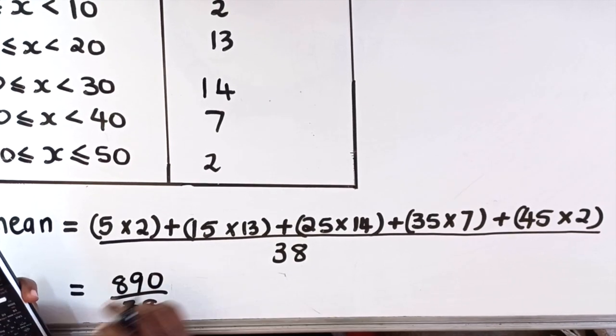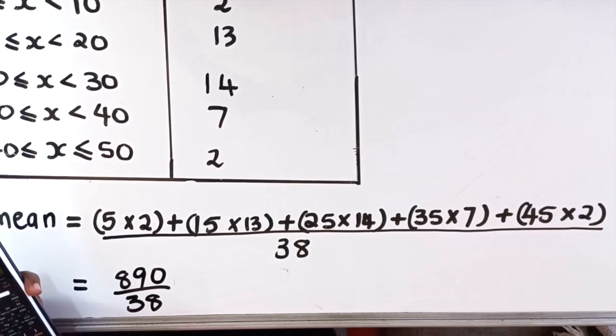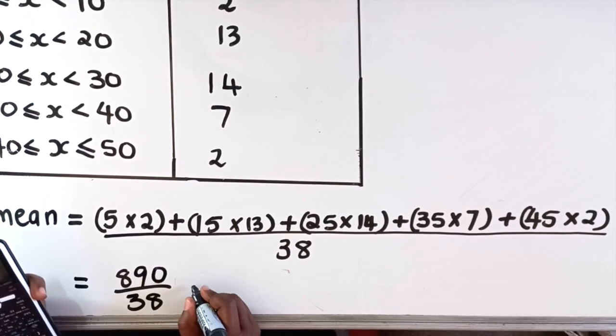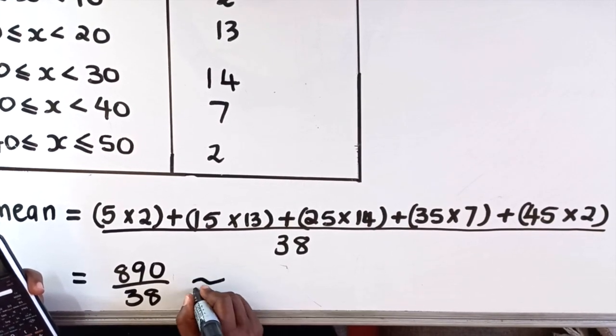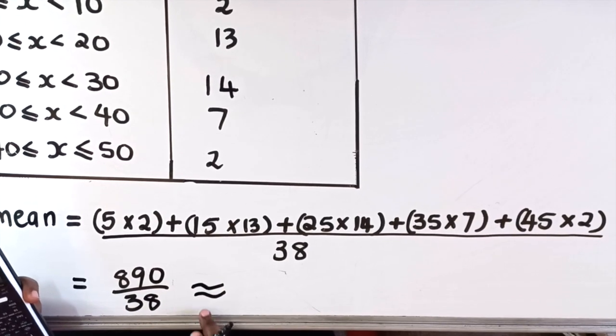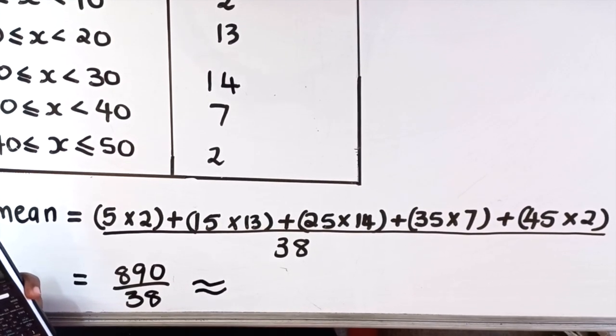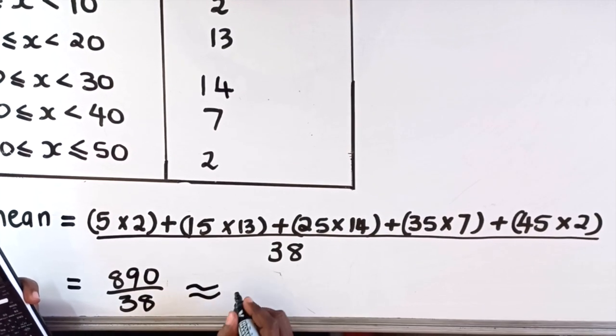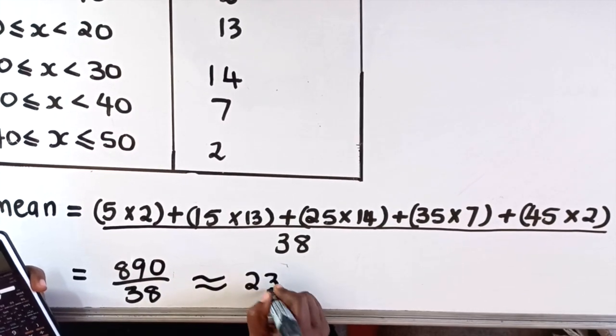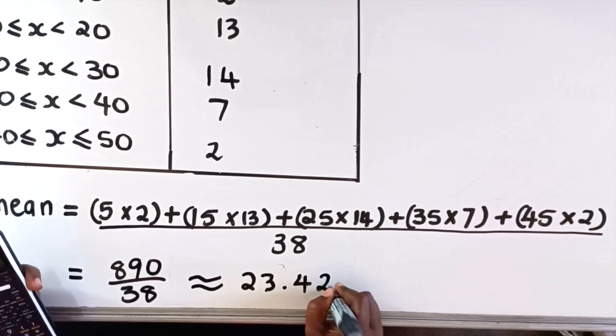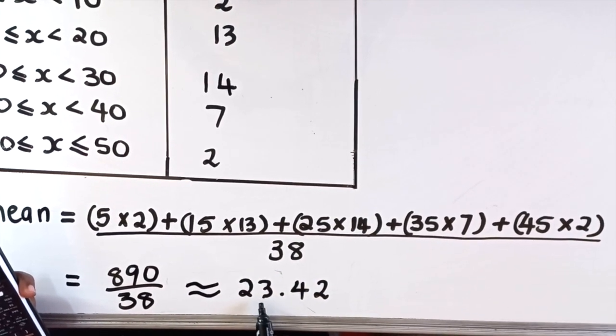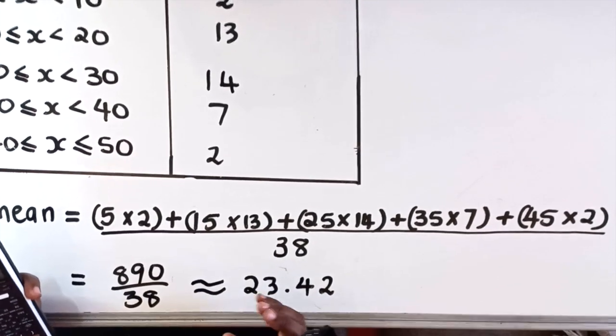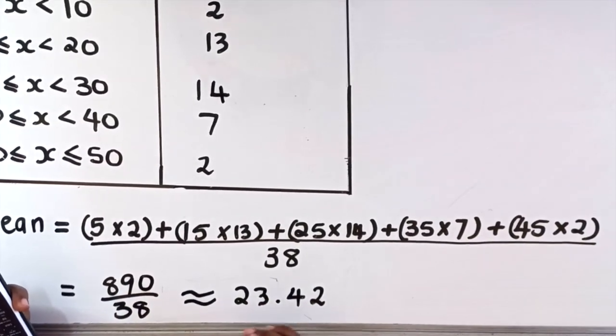I don't think you're gonna get marks for writing the fraction, you can just write divide by 38. So the estimated mean - usually when you look at memos they write an equal sign like this, which means estimated, it's not accurate because you don't know exactly what marks they got - so the estimated mean is 23.42. Now there's no child that's gonna get 23.42, so it means on average they are getting 23.42 out of 50.